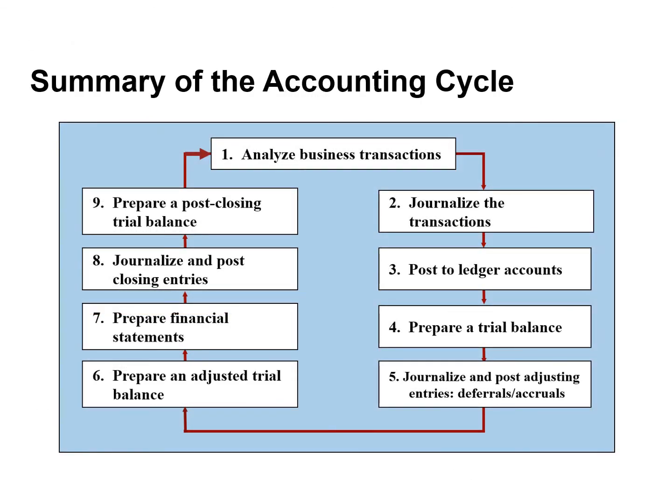This slide shows the required steps in the accounting cycle. The cycle begins with the analysis of business transactions and ends with the preparation of a post-closing trial balance. Companies perform the steps in the cycle in sequence and repeat them in each accounting period. Steps 1 through 3 typically occur during the accounting period, whereas steps 4 through 7 are on a periodic basis, such as monthly, quarterly, or annually.